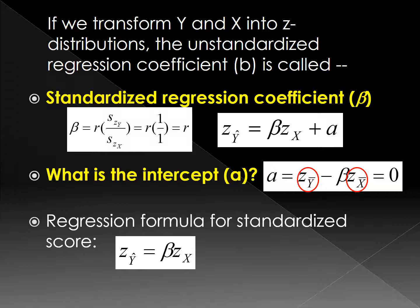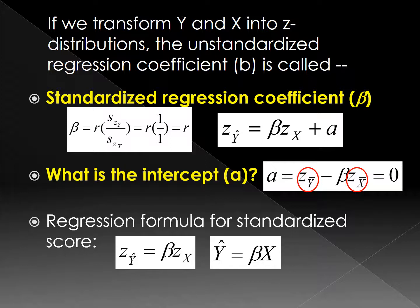There is no intercept anymore because the intercept is 0. The regression formula for the standardized distribution is Z_Y-hat equals beta times Z_X. To make things simpler, we can write the equation as Y-hat equals beta times X. When you see beta, you know there is no intercept, X refers to Z_X, and Y-hat refers to predicted Z_Y.